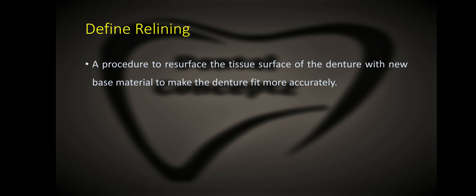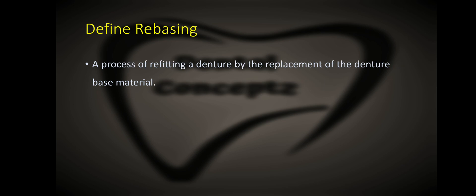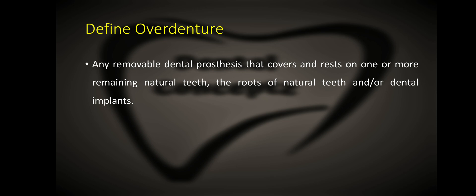What is relining? Relining is a procedure to resurface the tissue surface of the denture with new base material to make the denture fit more accurately. What is rebasing? Rebasing is a process of refitting a denture by the replacement of the denture base material. What is an overdenture? An overdenture is any removable dental prosthesis that covers and rests on one or more remaining natural teeth, the roots of natural teeth, and/or dental implants.